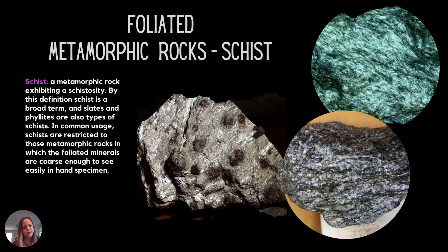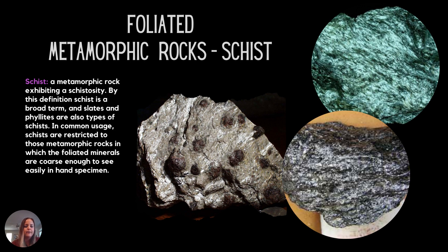With schist, the next grade of metamorphic foliated rock, most of the time we're looking at mica — a lot of muscovite and biotite. Sometimes schist is found with things like garnet, and we would call it a garnet schist. Depending on the type of mica in the rock, we might also see a glaucophane schist or a green schist, and it also tells us something about the metamorphic grade. With schist, you're looking for something with a very scaly-looking texture, which is all of those micas that have aligned themselves parallel.